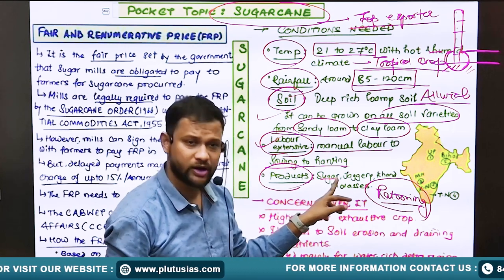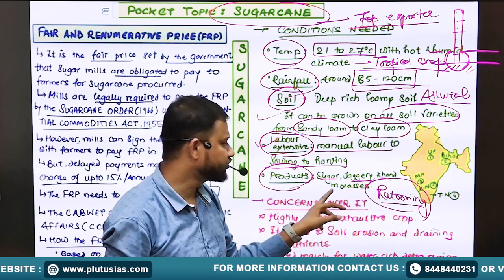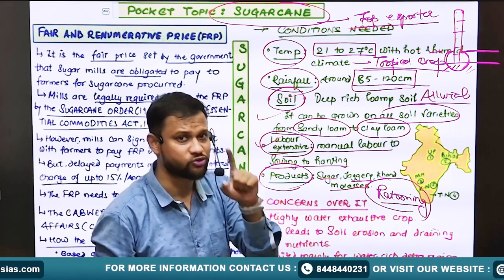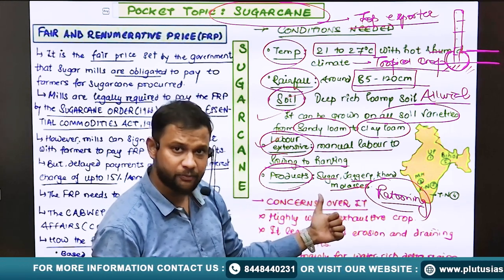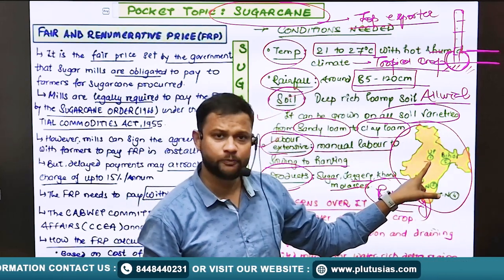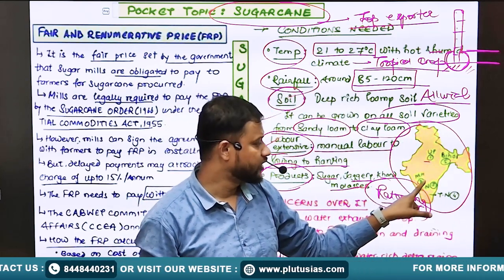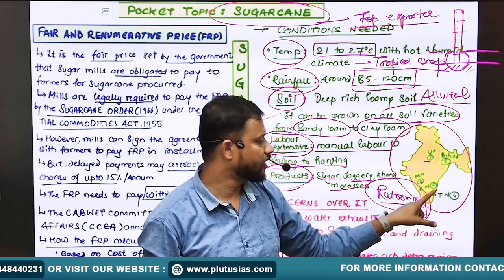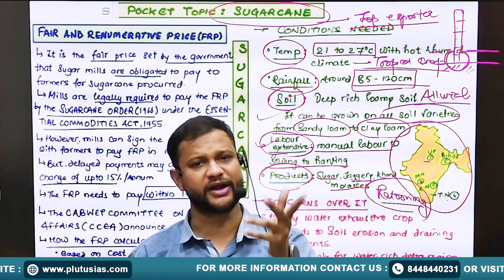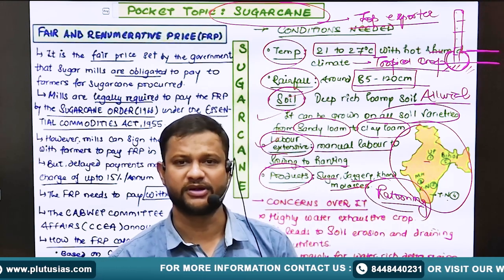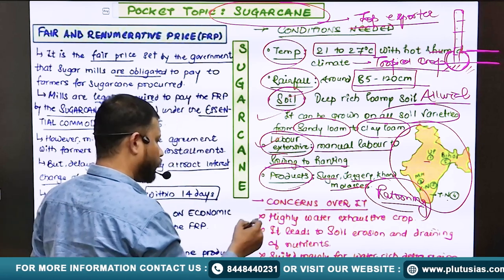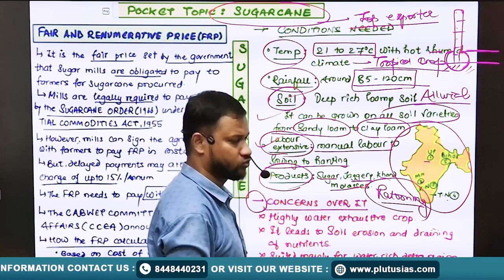When it comes to products from sugarcane, we have sugar, jaggery, khandsari, and molasses. Molasses is one of the most important products when it comes to biodiesel production. In terms of major producers, Uttar Pradesh is the leading producer, followed by Maharashtra, then Bihar, Karnataka, and Tamil Nadu. At the world level, Brazil and India are the major producers of sugar and sugarcane.